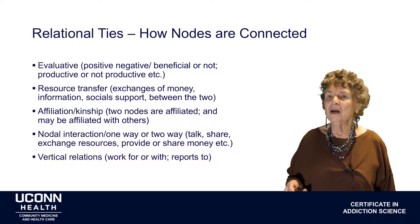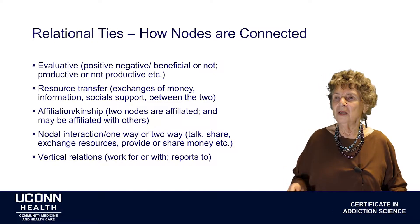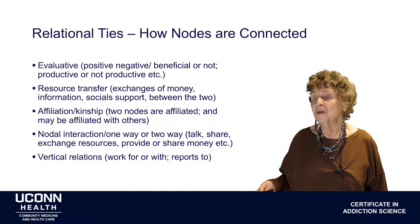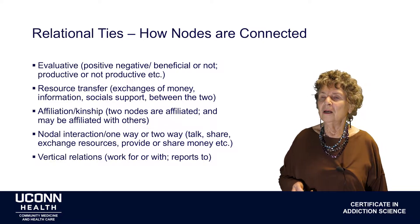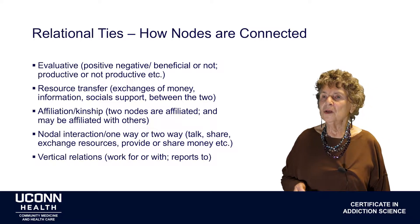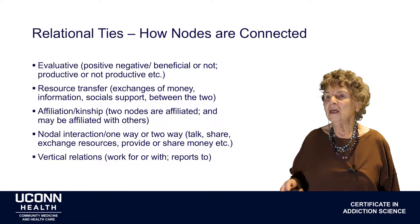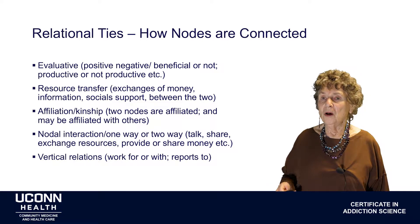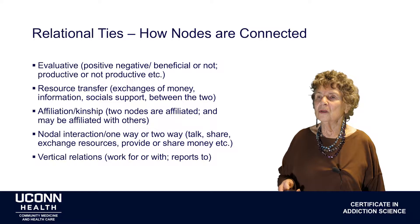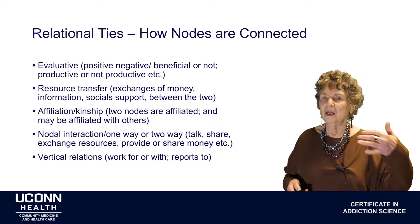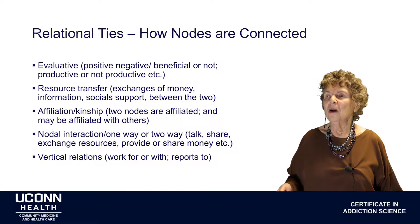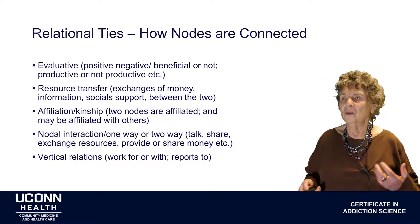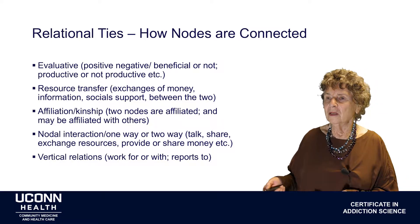Whether there is kinship or some kind of affiliation — for example, knowing someone prior to the assessment, whether they're related by marriage or by birth. Nodal interactions can be one way or two way, including whether people talk together, share resources together. And relationships can be vertical if someone is ranked under another person — for instance, in organizational hierarchy or drug dealing networks, knowing who reports to whom.